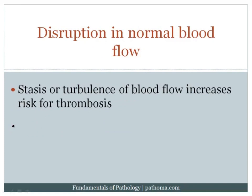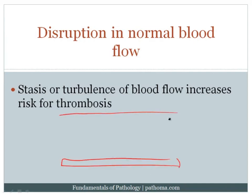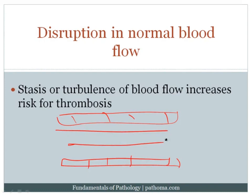The first risk factor for thrombosis is disruption in normal blood flow. Remember that blood flows through a vessel in a laminar pattern — a layered pattern. It's that layered pattern that helps to keep factors dispersed and inactivated. If there's stasis so that blood is no longer flowing, that would increase the risk for thrombosis. Or if there's turbulence so that blood is no longer flowing in a laminar pattern, that would also increase the risk for thrombosis.